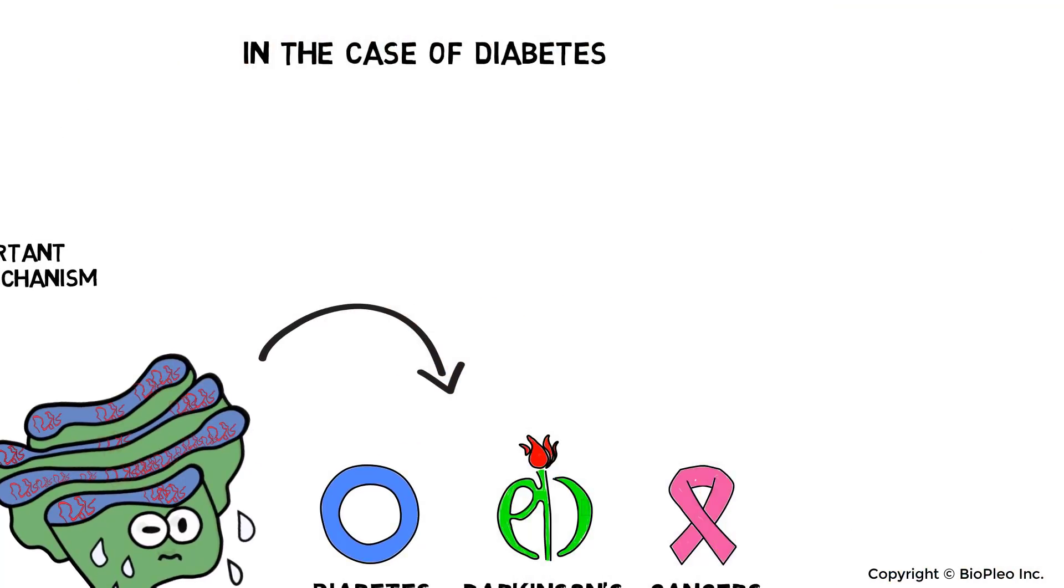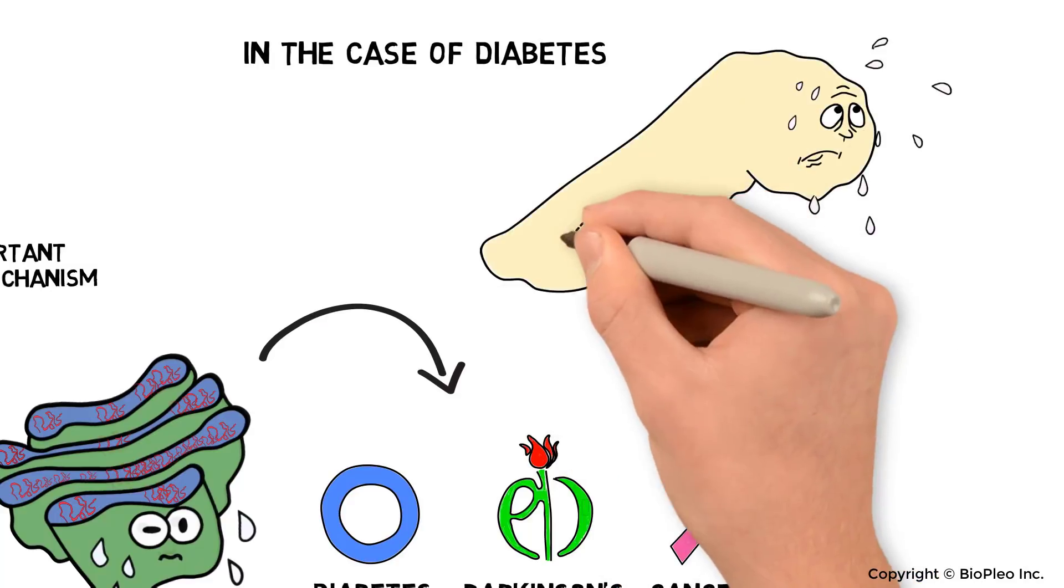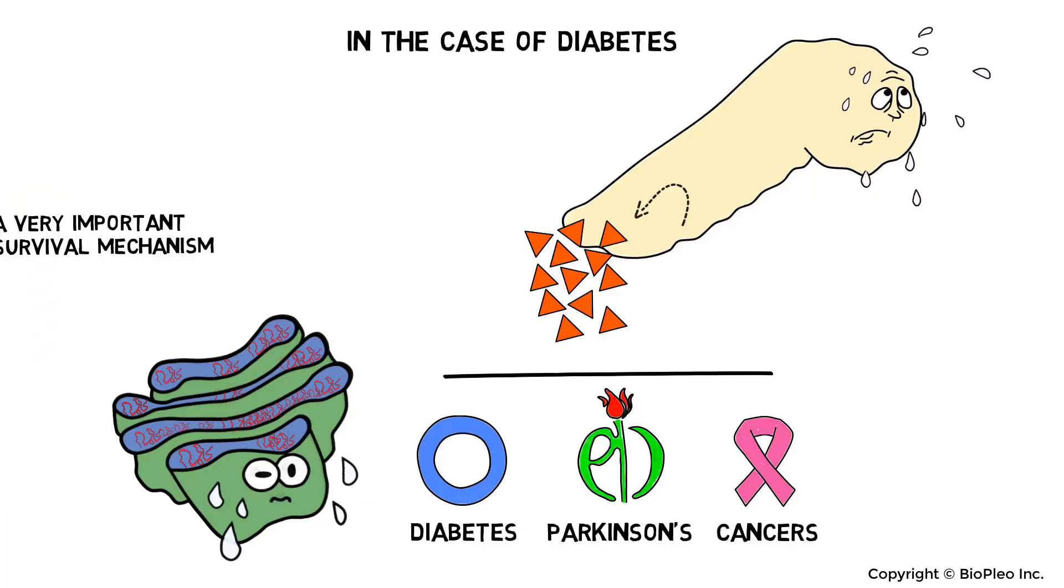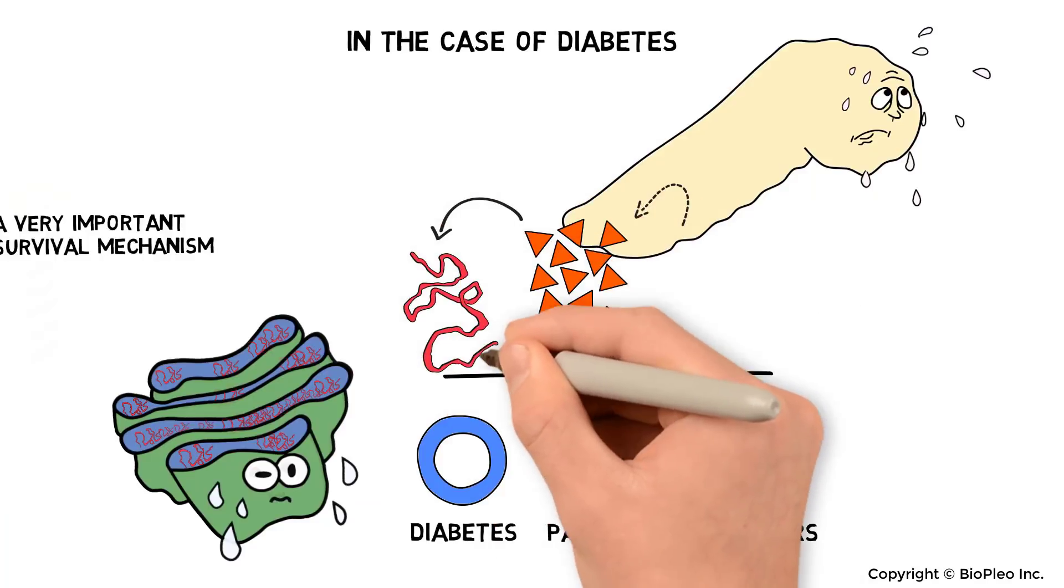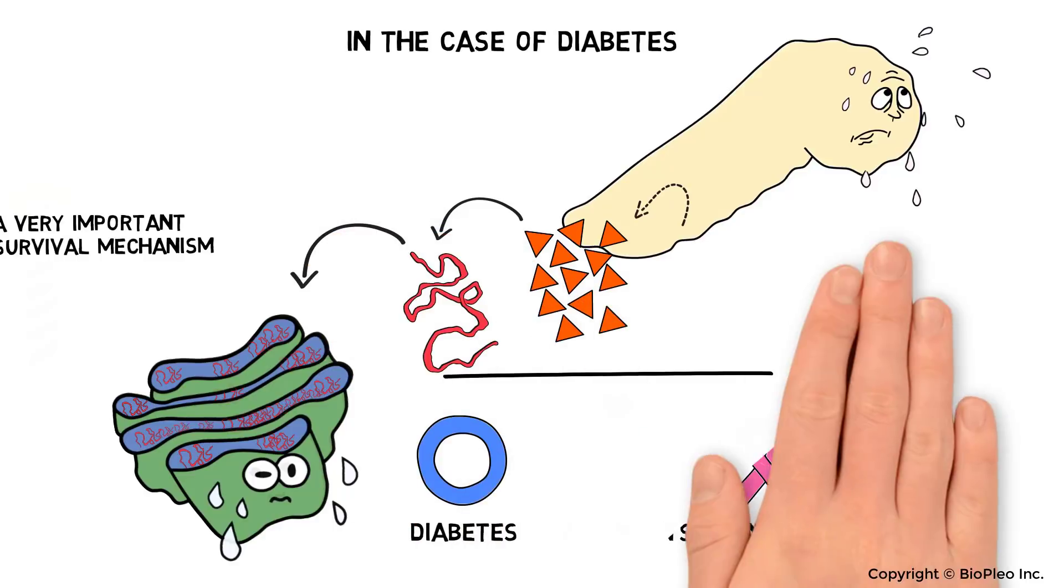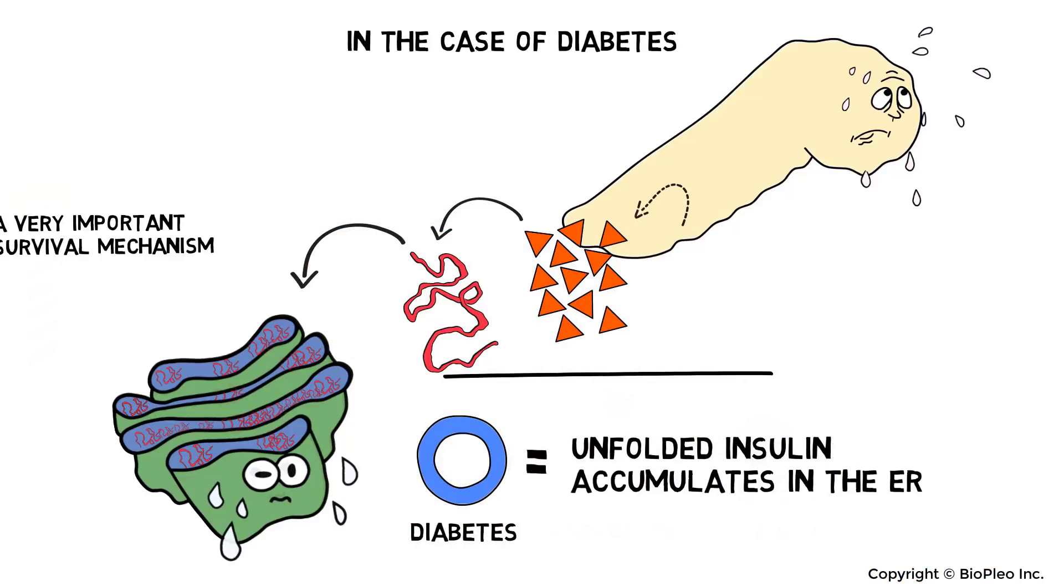In the case of diabetes, the pancreatic beta cells must produce loads of insulin to deal with insulin resistance or consumption of carbs. Since insulin is prone to misfolding, the overproduced misfolded insulin can overwhelm the ERAD and accumulate in the ER.